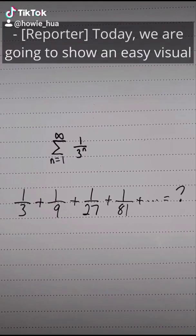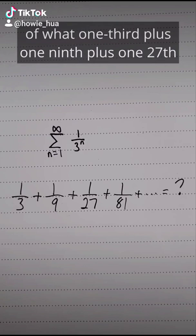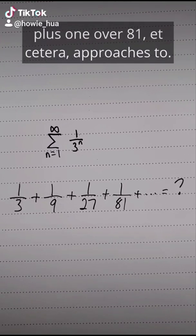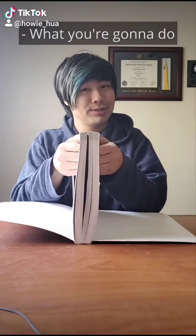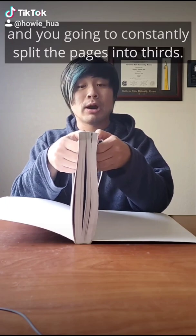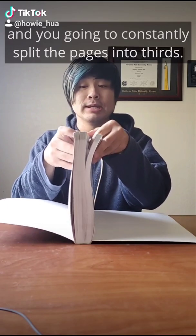Today, we are going to show an easy visual of what one-third plus one-ninth plus one-twenty-seventh plus one over 81, etc., approaches to. What you're going to do is you're going to grab the biggest book you can find and you're going to constantly split the pages into thirds.